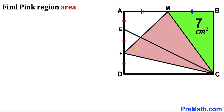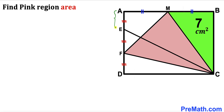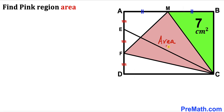Welcome to pre-math. In this video we have rectangle ABCD such that M is the midpoint on side AB, so segment AM equals segment BM. Points E and F are on side AD such that segment AE equals segment EF equals segment FD. The area of the green triangle MBC is 7 cm². Our task is to calculate the area of the pink shaded region — triangle FMC.